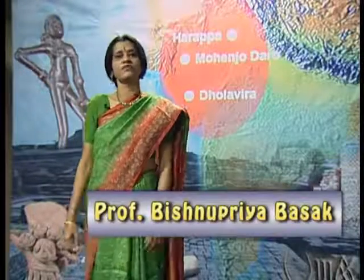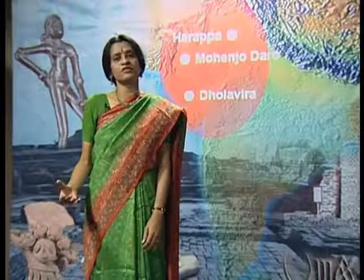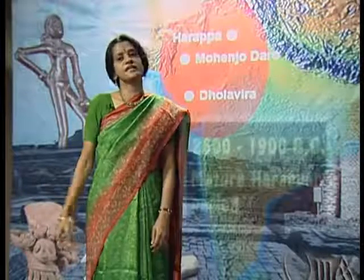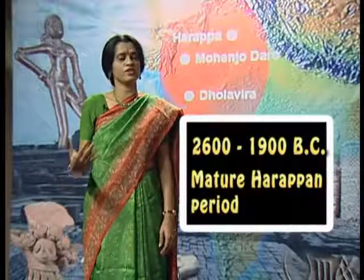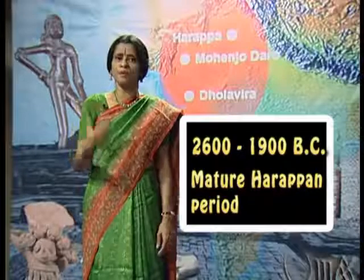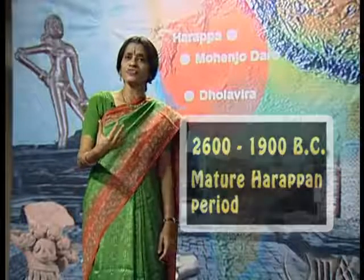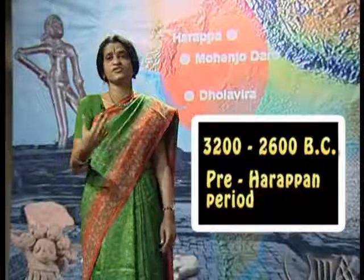Today, we are going to talk about the mature Harappan phase of the Harappan civilization, spanning a chronological period of 2600 to 1900 BC. Before we talk about this phase, which actually saw the efflorescence of the civilization, we need to look back to an earlier phase of 3200 to 2600 BC — a phase which archaeologists have called the pre or early Harappan.